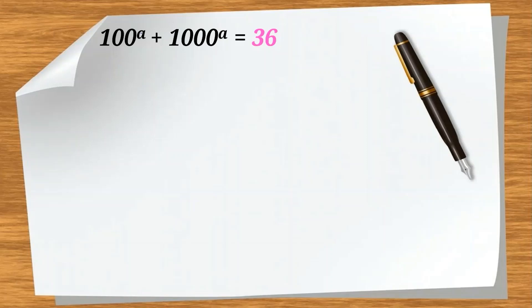100 to the A plus 1000 to the A equals 36, and A is a real number.